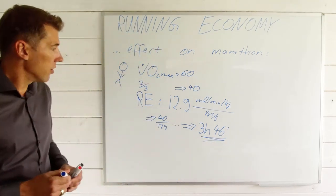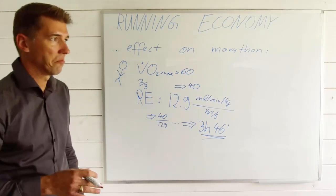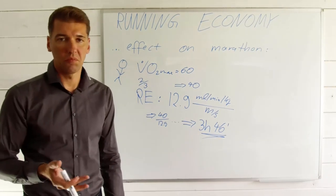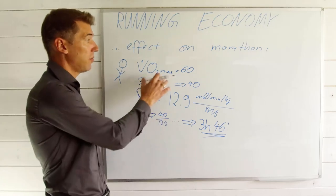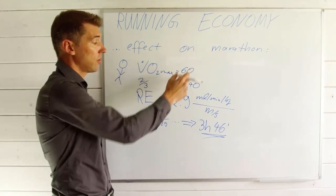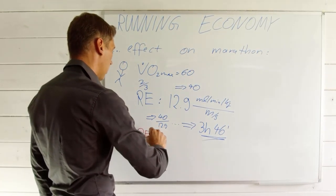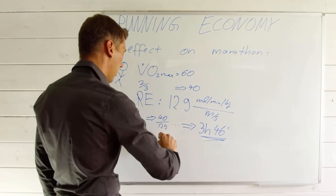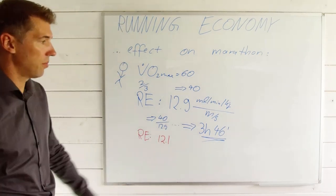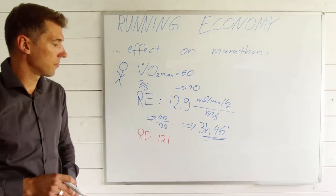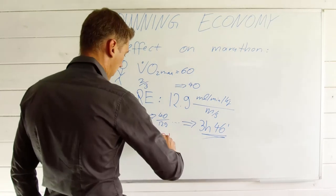So what about if we would change the running economy just a little bit, not a lot, not even 10%? So 10%, for example, would obviously be going from 60 to 66 VO2max. Let's say we change the running economy only a few percentages from 12.9. In this example, we go down to 12.1 milliliters per minute per kg per meters per second. So that's about 7, 8% or something. So now the math goes like this.